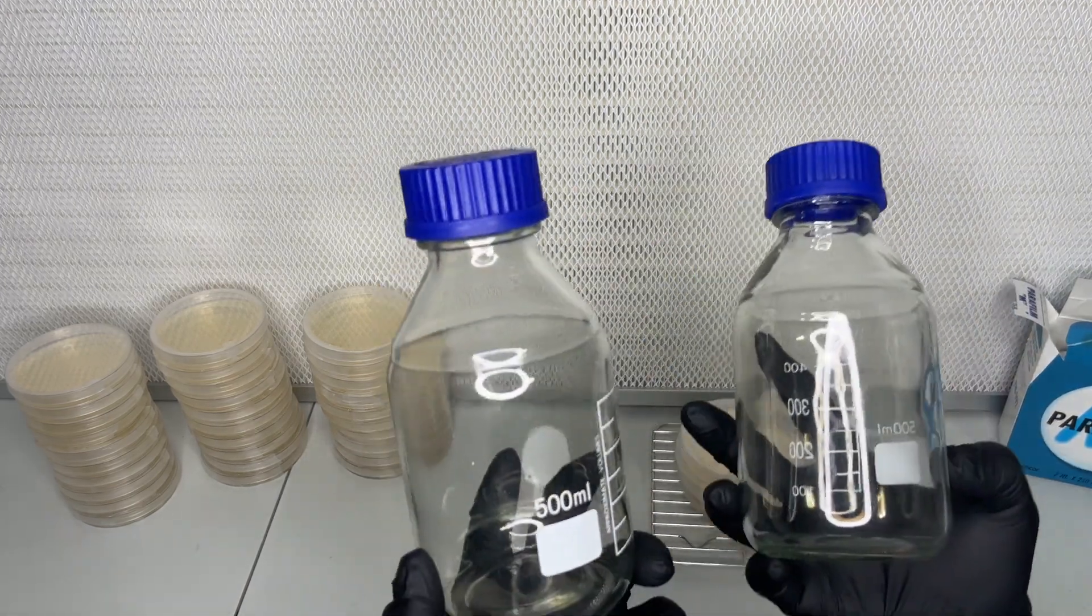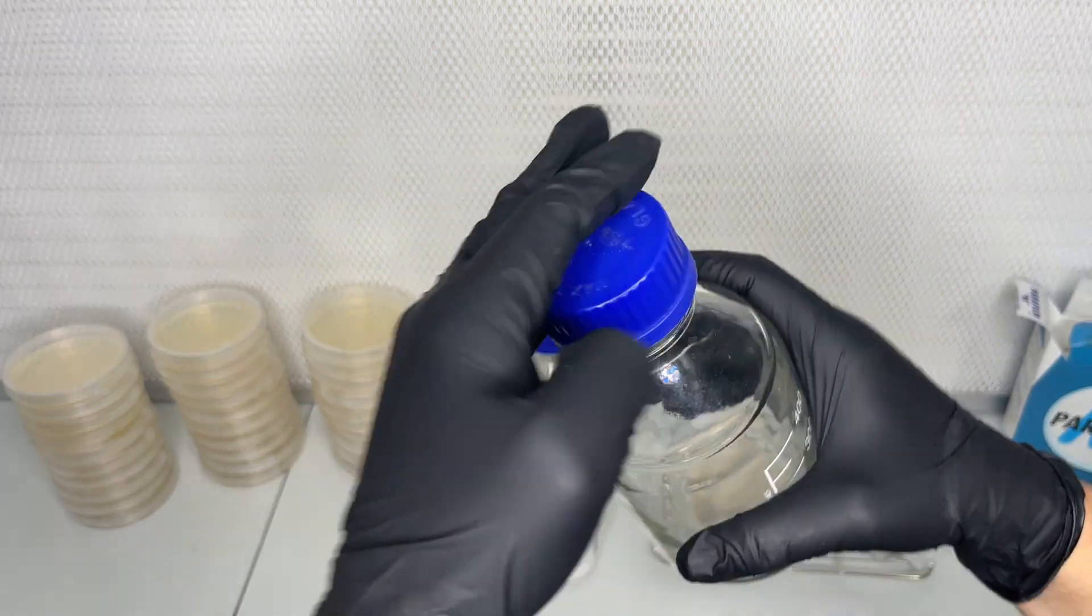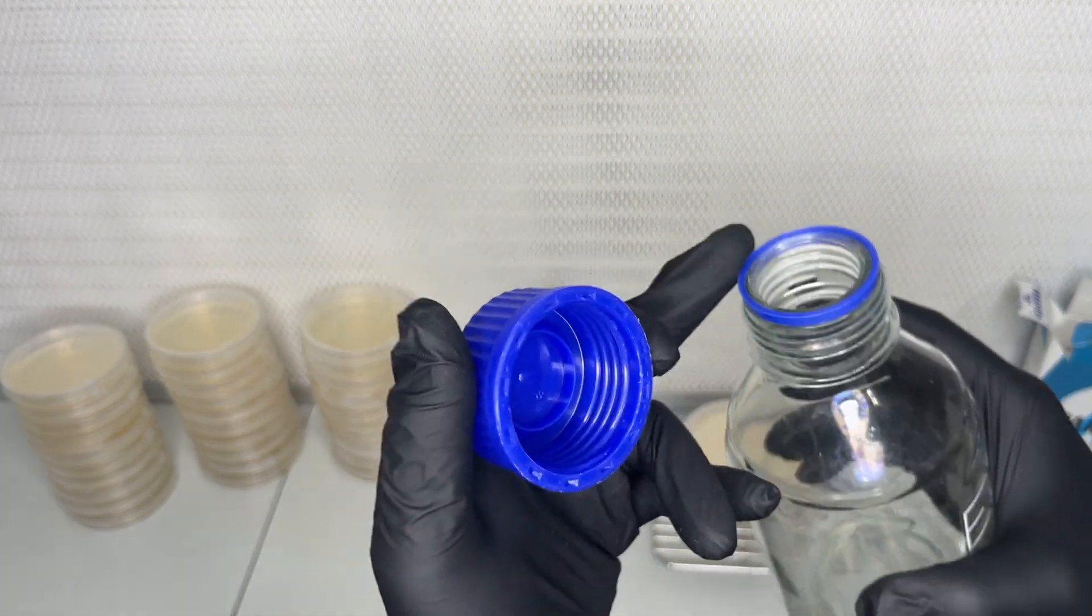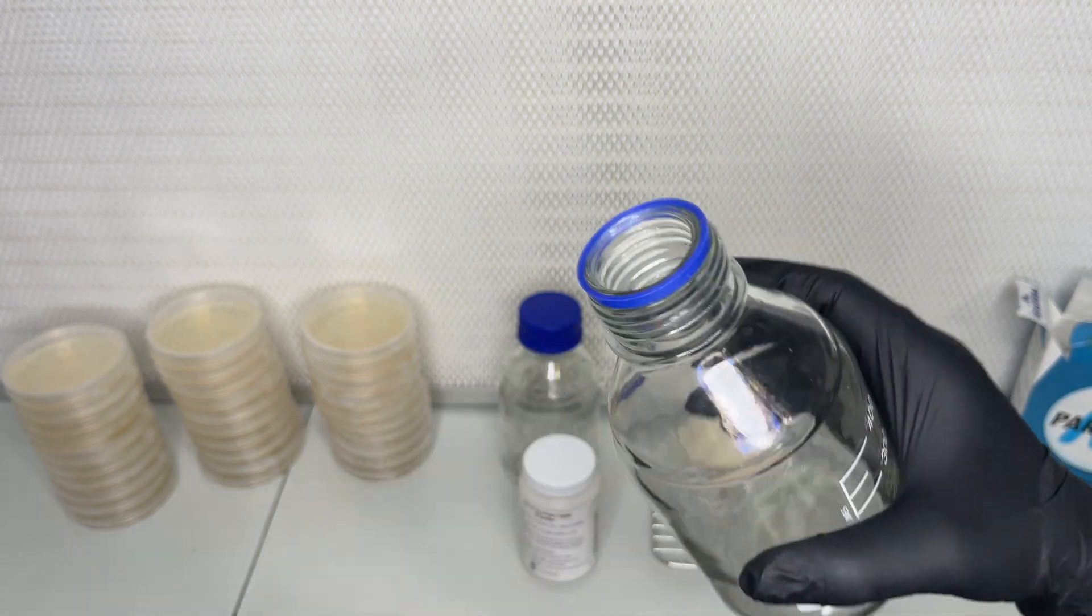And these media bottles are great for pouring the agar into the petri dishes. They have a ring at the top that prevents dripping when pouring the agar.